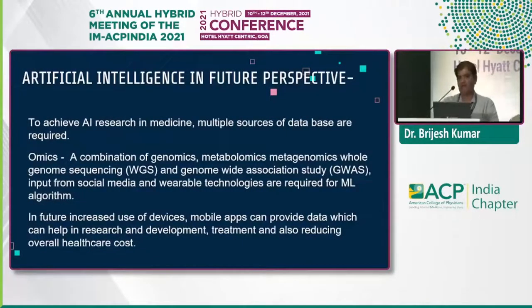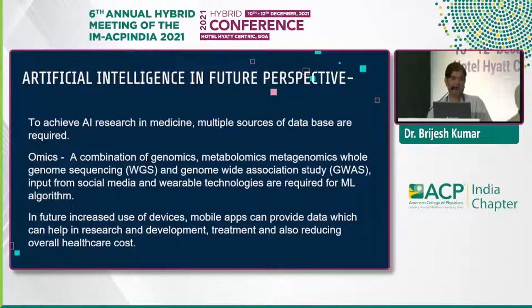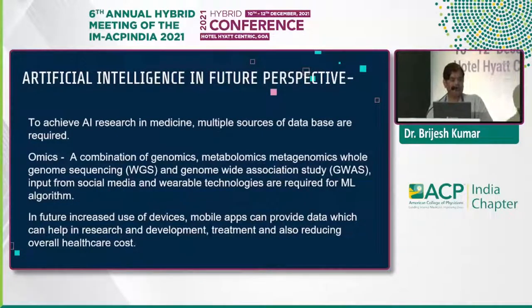Artificial intelligence future perspectives: to achieve artificial intelligence research in medicine, multiple sources of data are required — omics, including genomics, metabolomics, metagenomics, whole genome sequencing, and genome-wide association studies, as well as inputs from social media. Durable technologies are required for machine learning algorithms. In the future, increased use of devices and mobile apps can provide data which can help research and development, treatment, and also reduce healthcare costs.